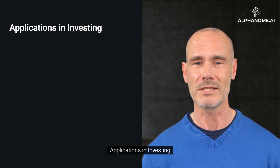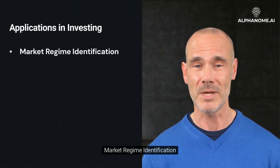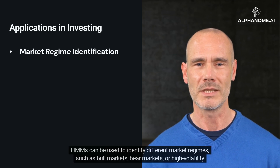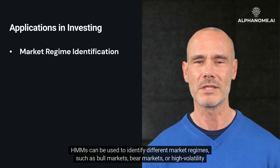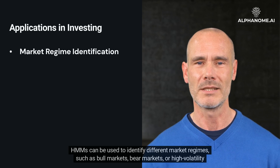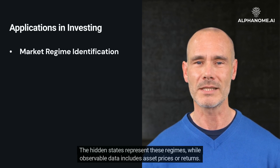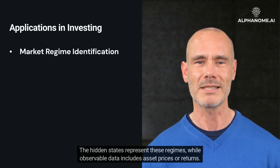Applications in Investing. Market Regime Identification: HMMs can be used to identify different market regimes, such as bull markets, bear markets, or high volatility periods. The hidden states represent these regimes, while observable data includes asset prices or returns.